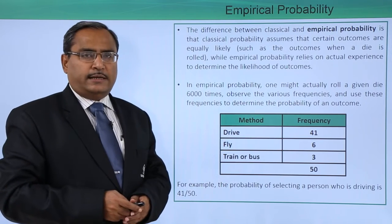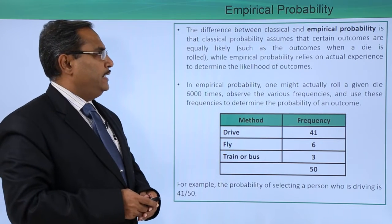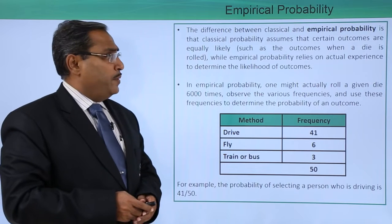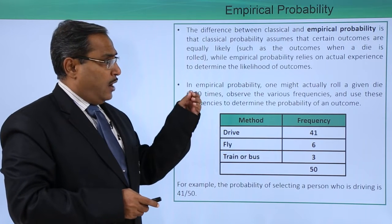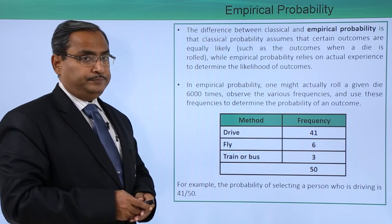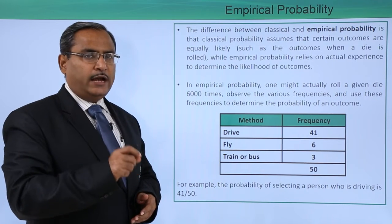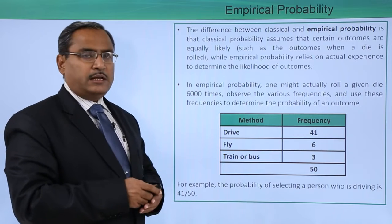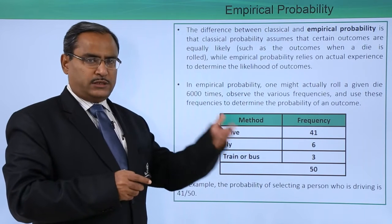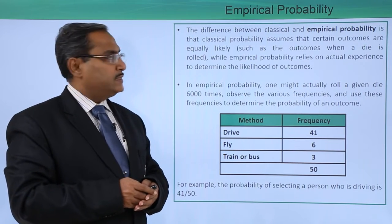The difference between classical and empirical probability is that classical probability assumes that certain outcomes are equally likely. That means each and every outcome is equally likely, as considered in classical probability. You can watch the previous video where we have discussed this.